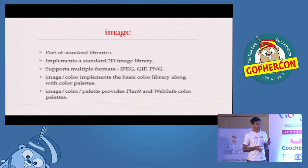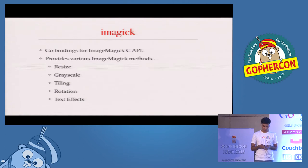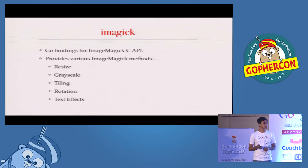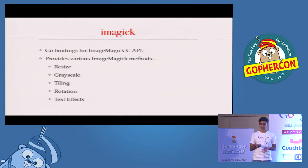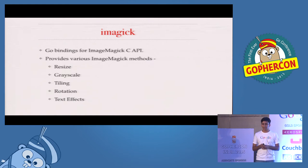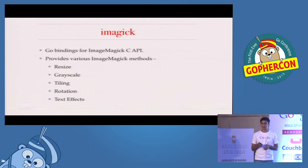The second one is ImageMagick bindings. ImageMagick has a lot of good functions for processing. They are basically available as a C API, so most bindings are through Cgo. It has implemented almost all the ImageMagick methods available for image resizing, grayscaling, tiling, rotating, text effects, and all these things.